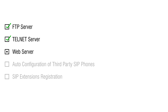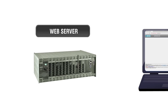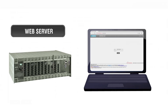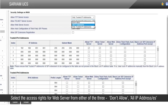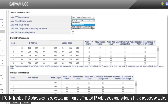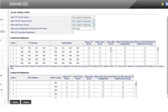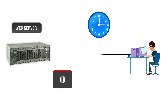Let us see the web server access rights now. The web server, or web GUI, is used for configuring Servum UCS through a web browser. Select the access rights for the web server from either of the three options: Don't Allow, All IP Addresses, or Only Trusted IP Addresses. If only trusted IP addresses is selected, mention the trusted IP addresses and subnets in the respective tables. If any IP address sends a request to access the web server with invalid credentials for more than 5 times within 10 minutes, it will be blocked for 10 minutes.